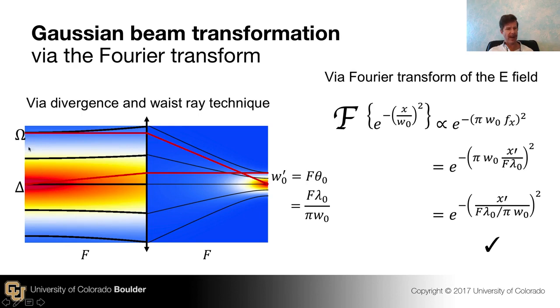And we have a waist at the front focal plane, and of course we know that that transforms to a new waist at the back focal plane, and I've drawn in the divergence and waist rays here and reminded ourselves that the new waist W0' is equal to the focal length of the lens times the initial divergence, θ0 right there. So we know that already.